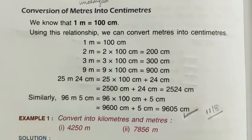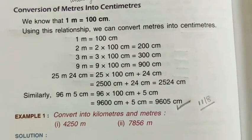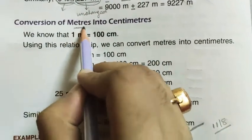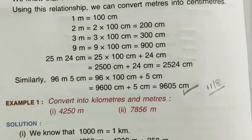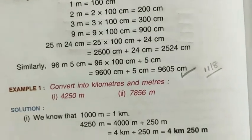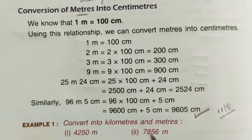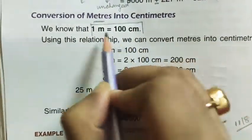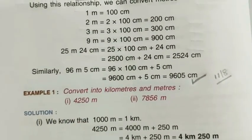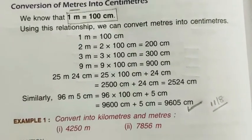Now the next conversion: conversion of meter into centimeter. Centimeter is a smaller unit than meter. For measuring short distances — like a pencil box, a pencil, or a small piece of cloth — we use centimeter. One meter is equal to one hundred centimeters. That means if you add one hundred centimeters together, it produces one meter.